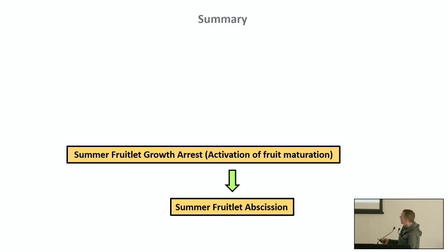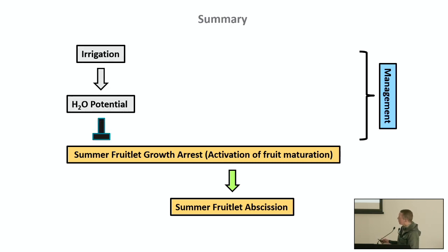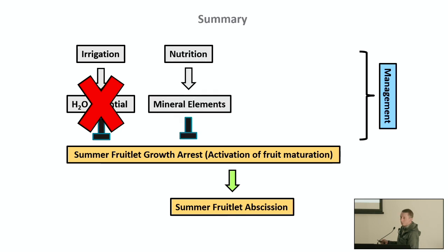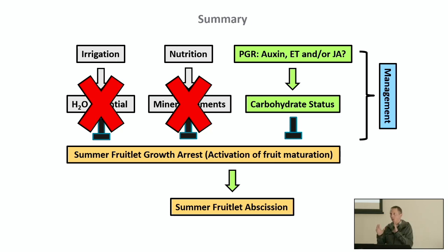In summary, summer fruitlet growth arrest is likely linked to activation of a fruit maturation-like phase, ultimately leading to fruitlet abscission. Irrigation and nutrition programs appear not to be viable management pathways. The most promising way forward is through some sort of PGR-based application targeting auxin, ethylene, and/or jasmonic acid, to allow fruits to persist when carbon availability becomes limiting.